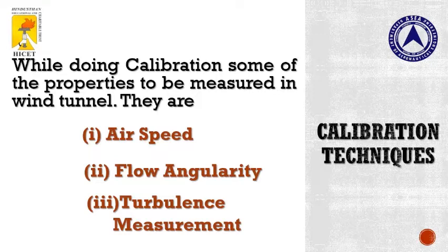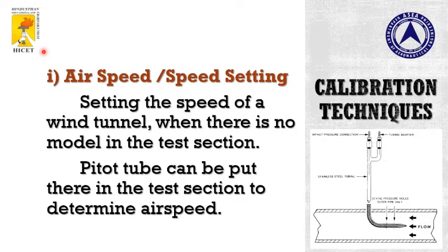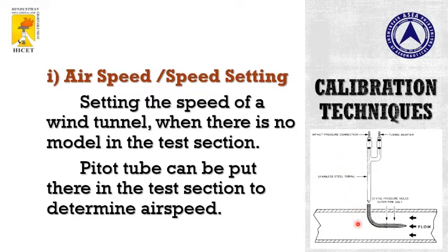These are the properties to be measured during calibration: airspeed, flow angularity, turbulence measurement, and airspeed setting. Airspeed is the normal or optimal speed inside the test section. We have to measure the speed before starting or before calibrating. This airspeed measurement will help you to know the speed of the flow in the test section. We have to keep a probe inside the test section, which will help you to know the airspeed in the test section.